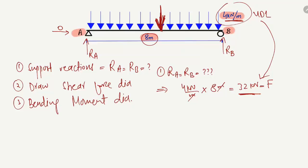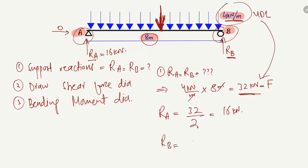Since the 32 kN point load acts at the center of the beam, half the load is taken by RA and half by RB. So RA = 32 / 2 = 16 kN, and RB = 32 / 2 = 16 kN. This is the easy way to find support reactions for a simply supported beam with a uniformly distributed load.